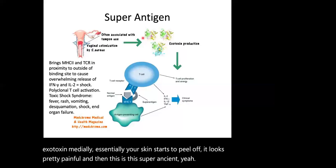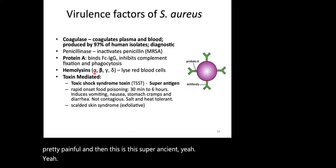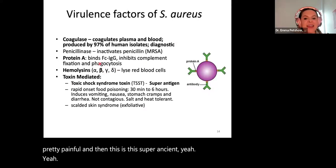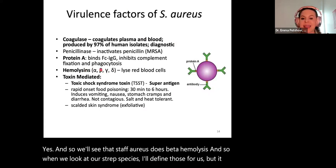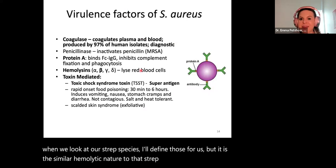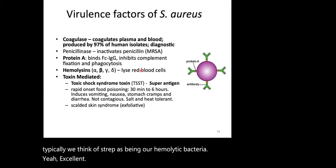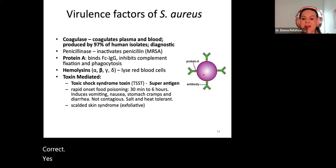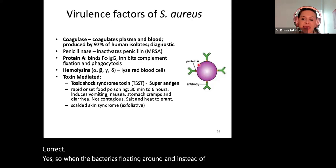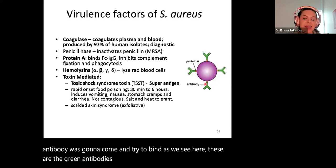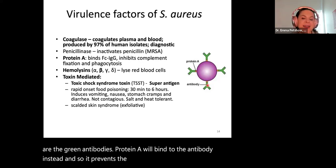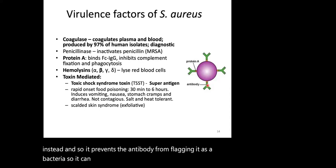A student asks whether the staph aureus hemolysins — alpha, beta, gamma — are similar to strep ones in terms of partial versus complete hemolysis. Yes — staph aureus does beta hemolysis. When we look at our strep species, it is a similar hemolytic nature, even though we typically think of strep as being our hemolytic bacteria. Protein A is a membrane-bound protein. When an antibody tries to bind, protein A binds to the antibody instead, preventing it from flagging the bacteria — so it can essentially hide out for longer.